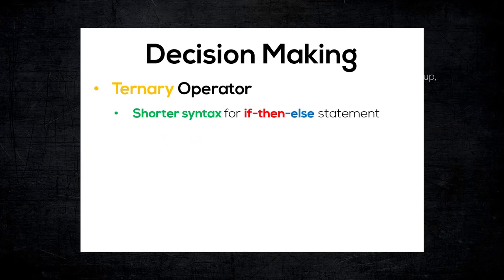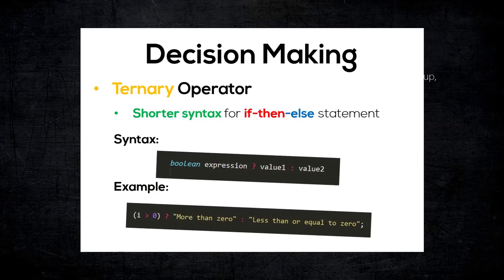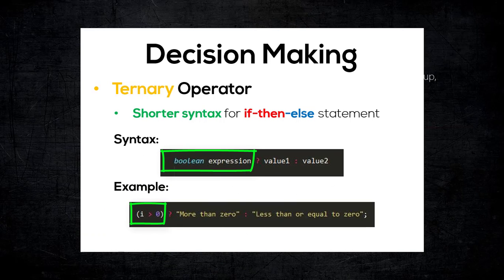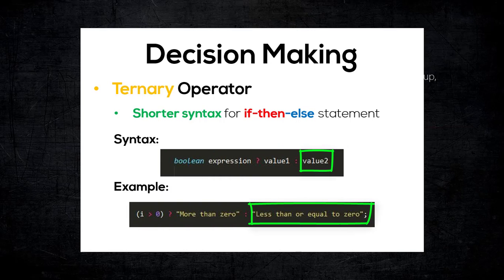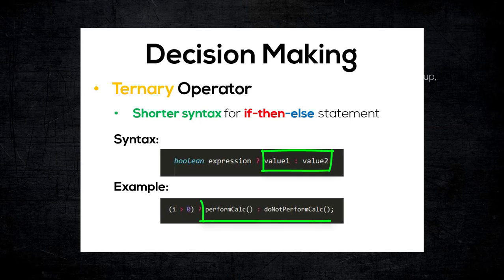Last but not least, we have the ternary operator, which is basically the shortest syntax for the if-then-else statement. And it looks something like this, where the first operand is a boolean expression. If the expression is true, then the value of the second operand will be returned; otherwise, the value of the third operand will be returned. In addition, the second and third operands of the ternary operator are not only for a simple variable or a constant — they can be a call to a method as well.